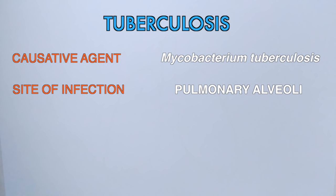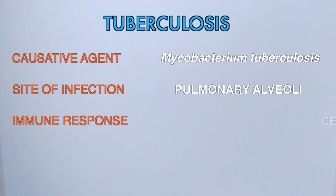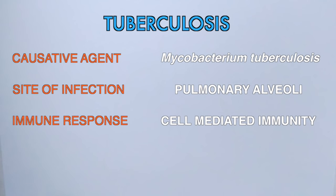Mycobacterium is a strict aerobe and needs oxygen for survival, which is the reason for its site of infection in the alveoli where gas exchange takes place. In this infection, the immune response is in the form of cell-mediated immunity, which means antibodies are not involved in eradicating the pathogen.